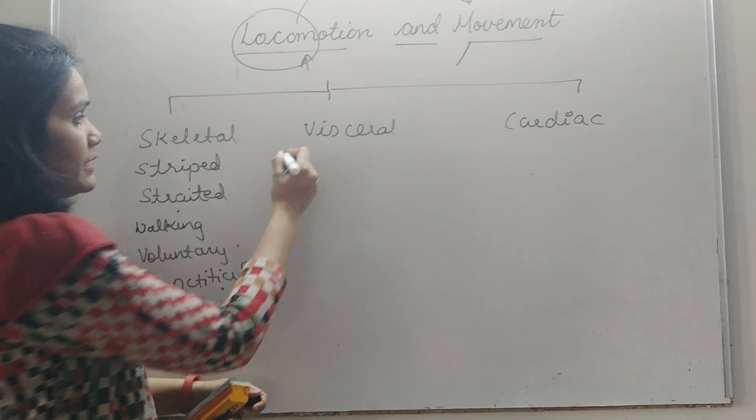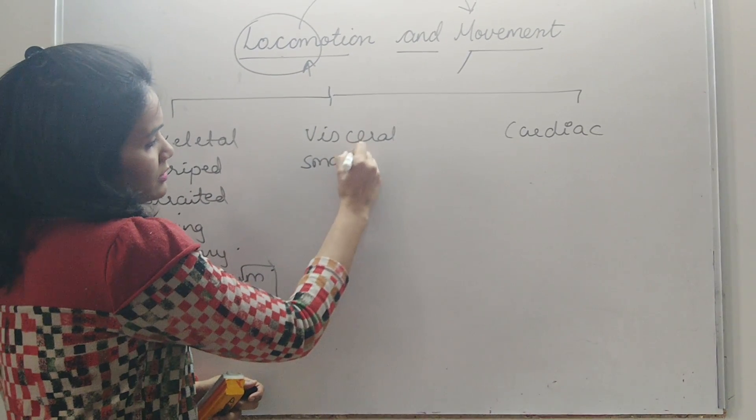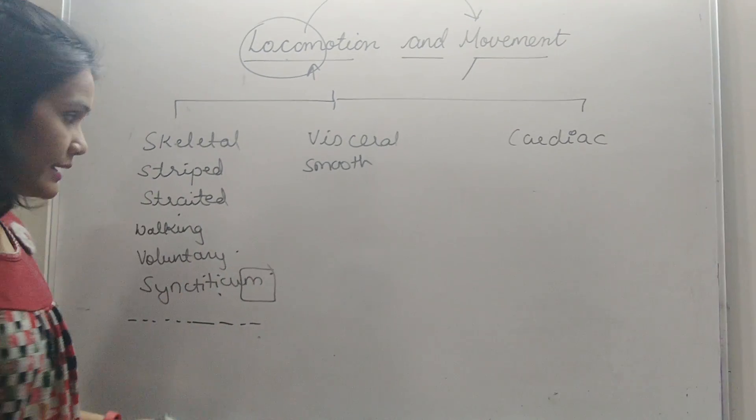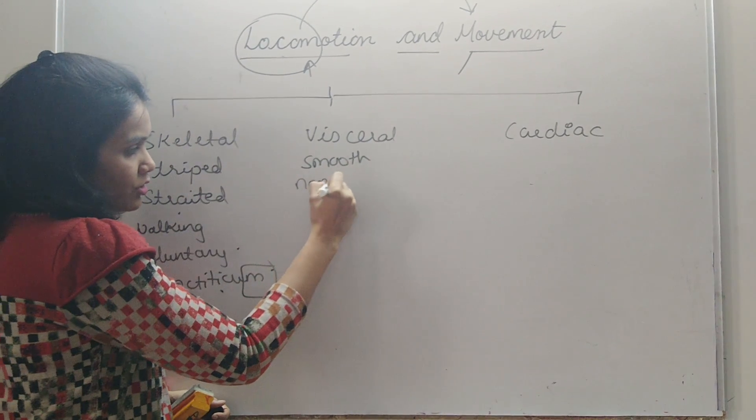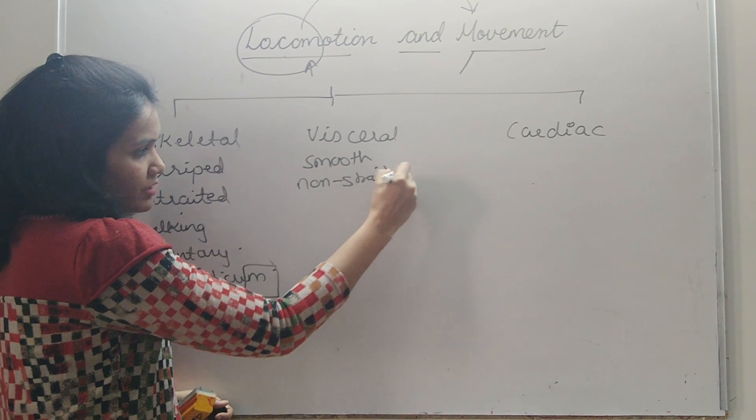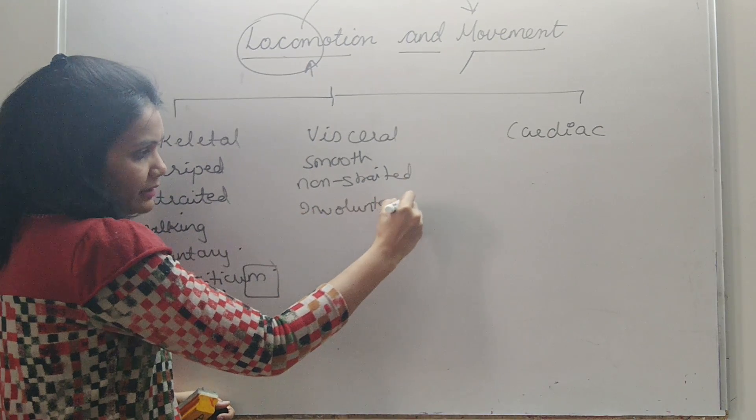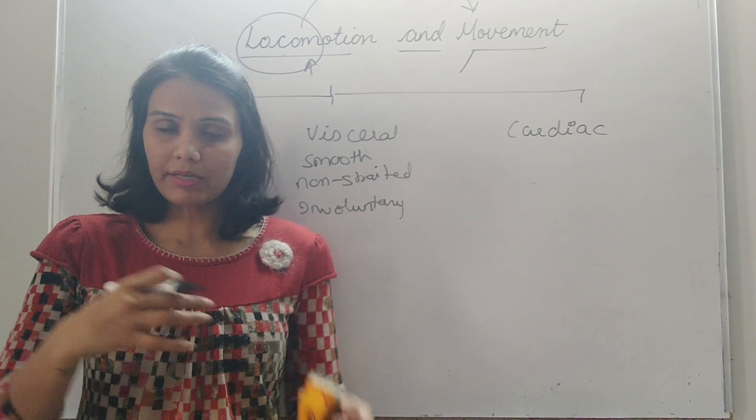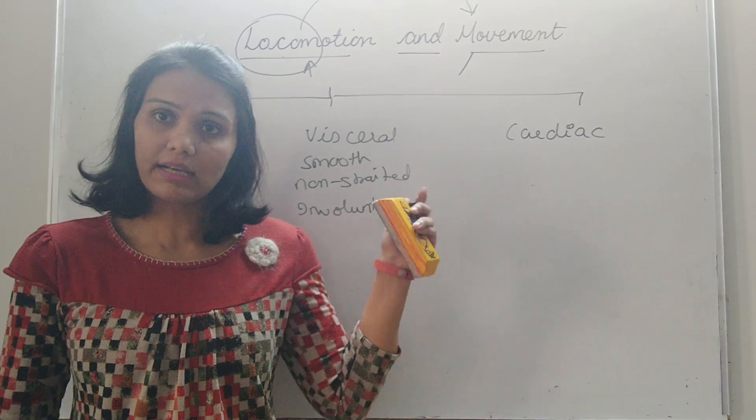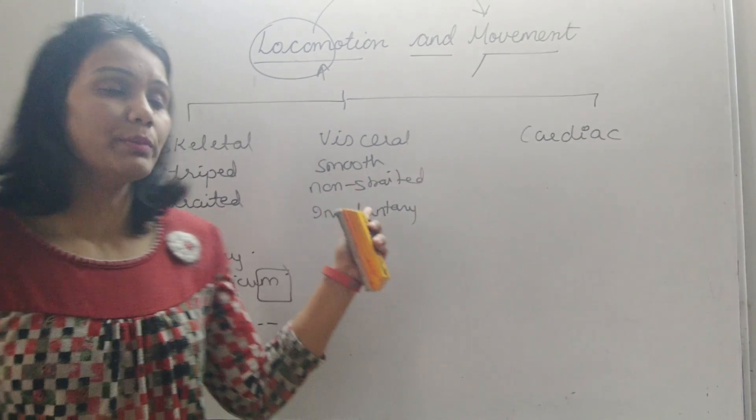Visceral muscles are found in the smooth canal. They are smooth muscles and non-striated. Involuntary because we cannot control the movement. We cannot control that food should remain in the stomach and not move into the intestine. So these are all involuntary movements.